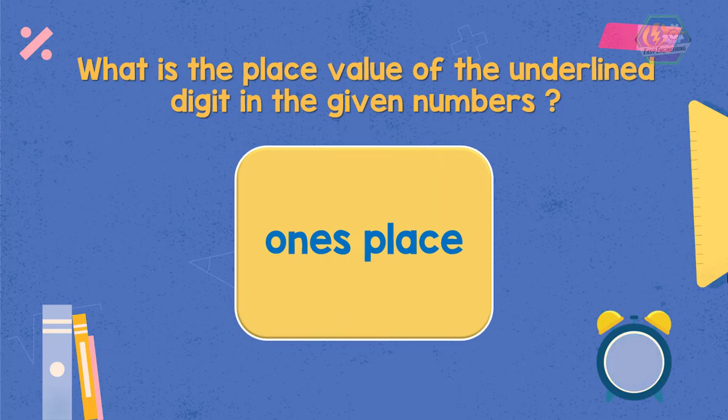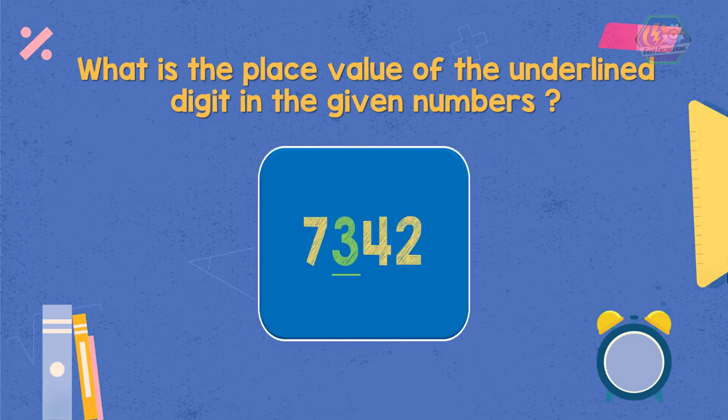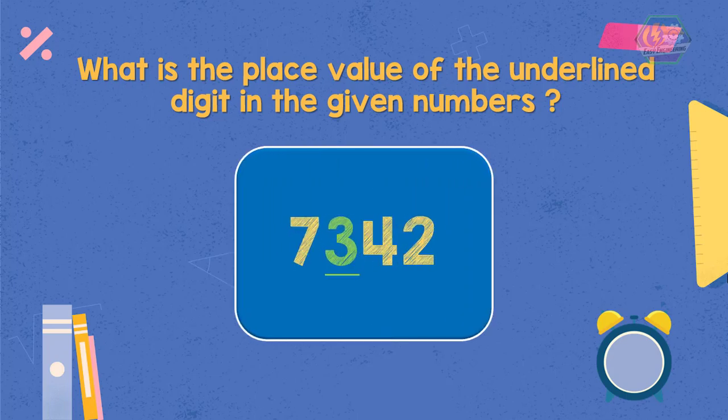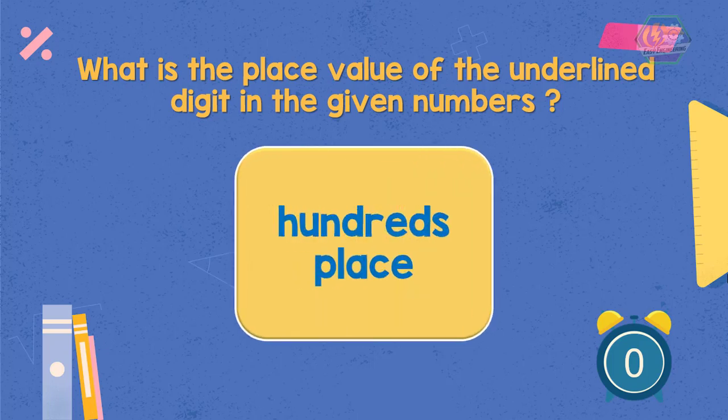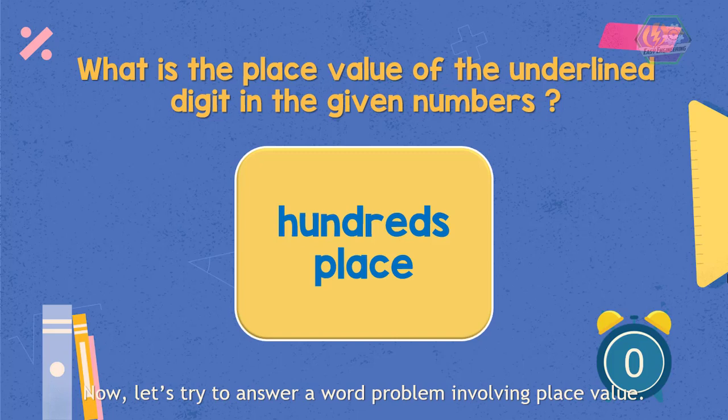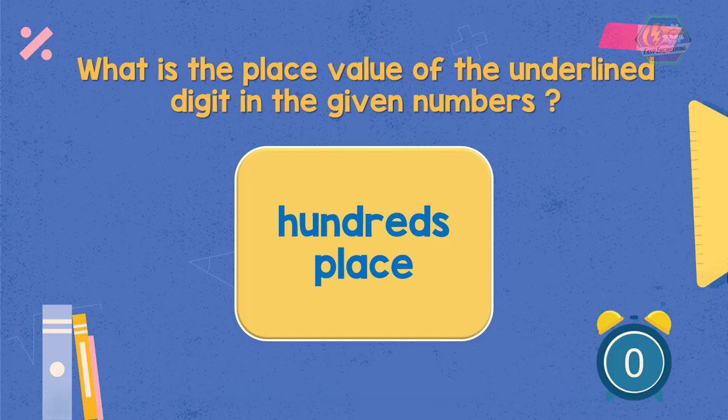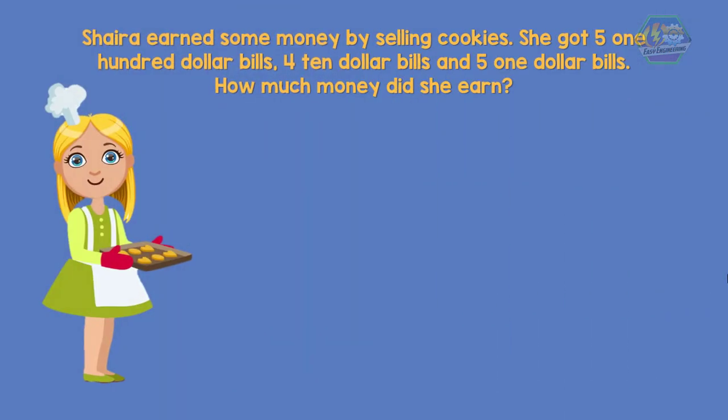Now how about this: what is the place value of digit 3 in the number 7342? Correct, digit 3 is in the hundreds place.